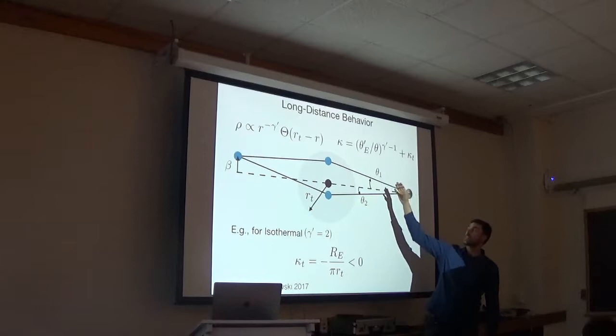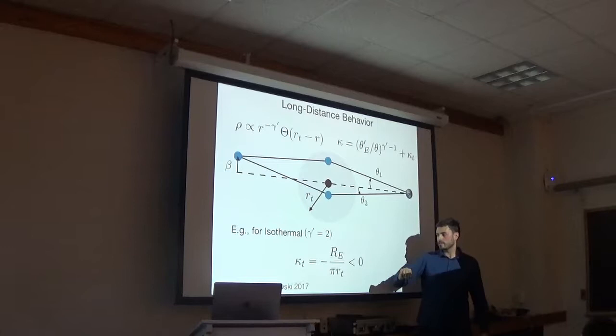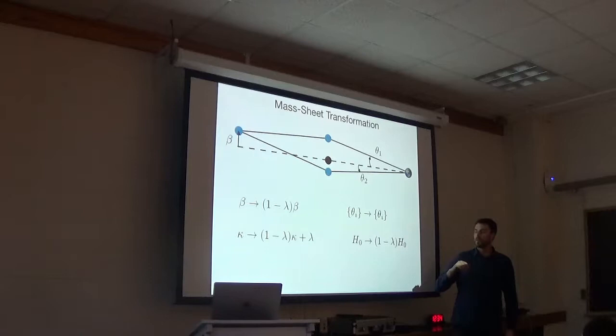But if you just truncate it, your convergence will be a rescaled version of the old one plus this kappa sub t term. So for example, for isothermal, this kappa sub t works out to be minus Einstein radius divided by pi truncation radius. There's different forms for different gamma primes, but in all cases it's a constant. The fact that it's a constant convergence makes it invisible to strong lensing. This is because of mass sheet degeneracy.